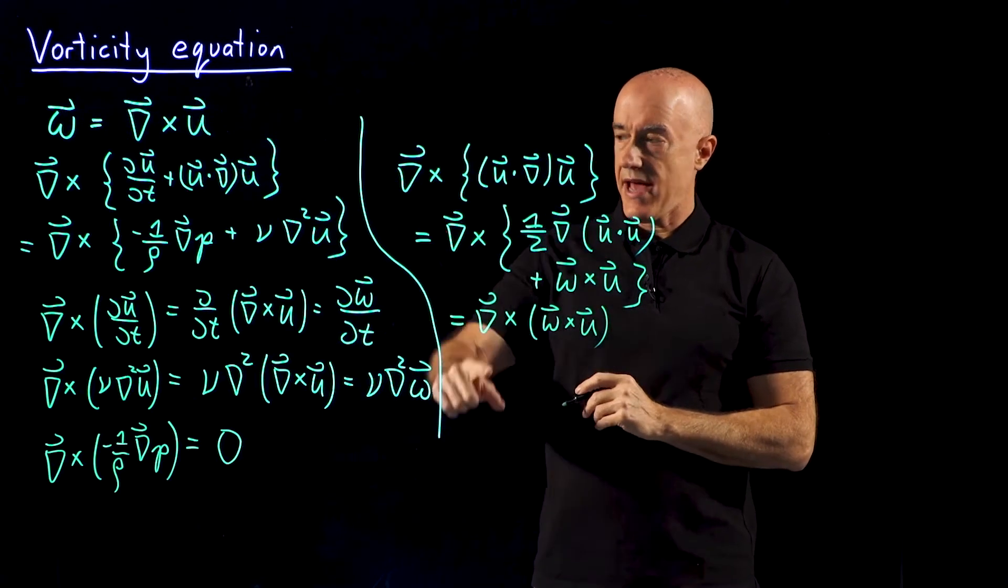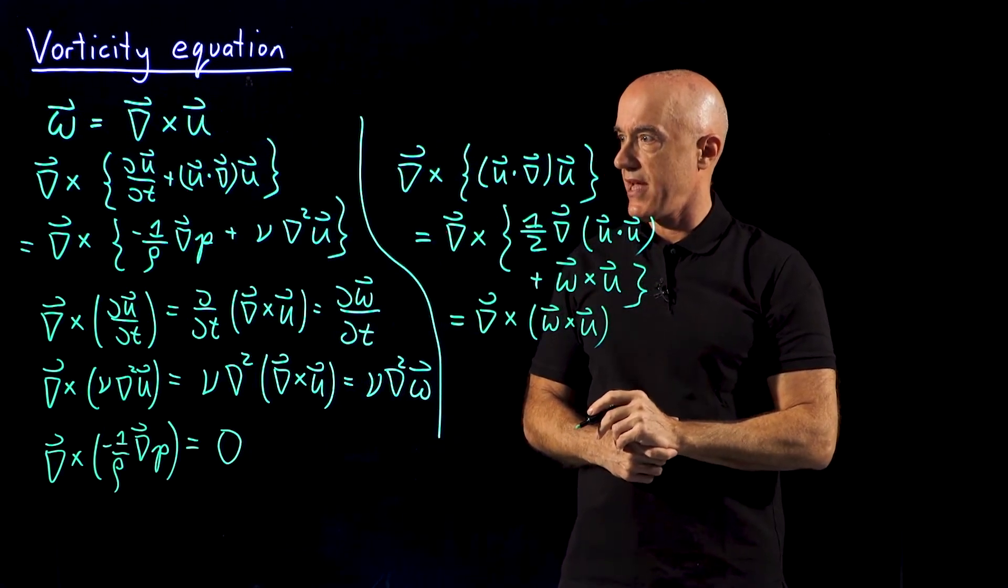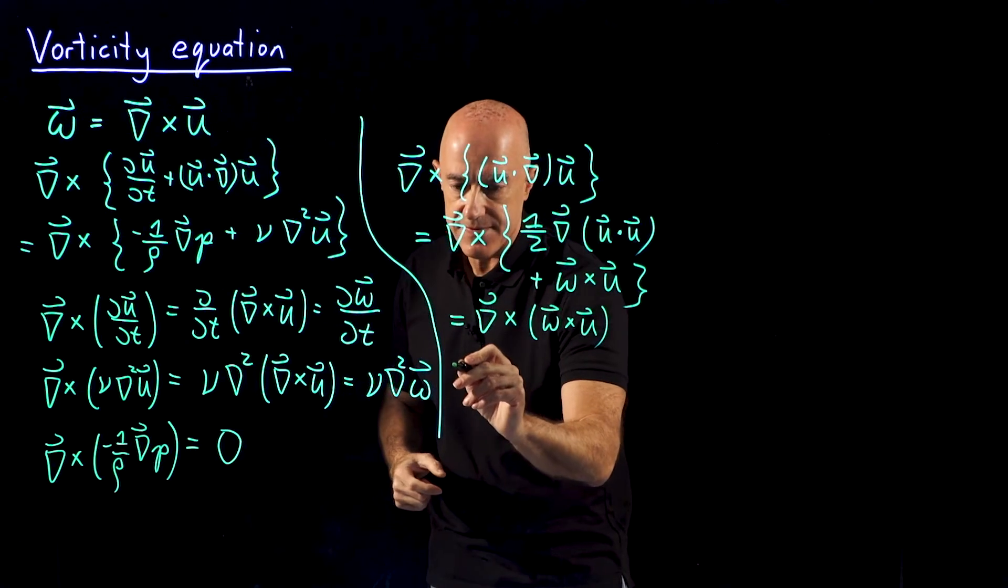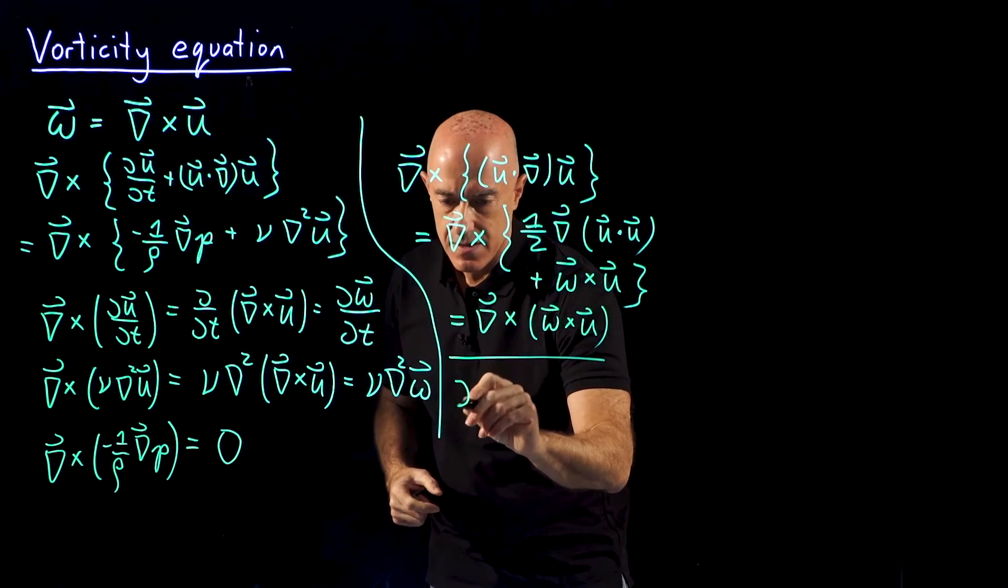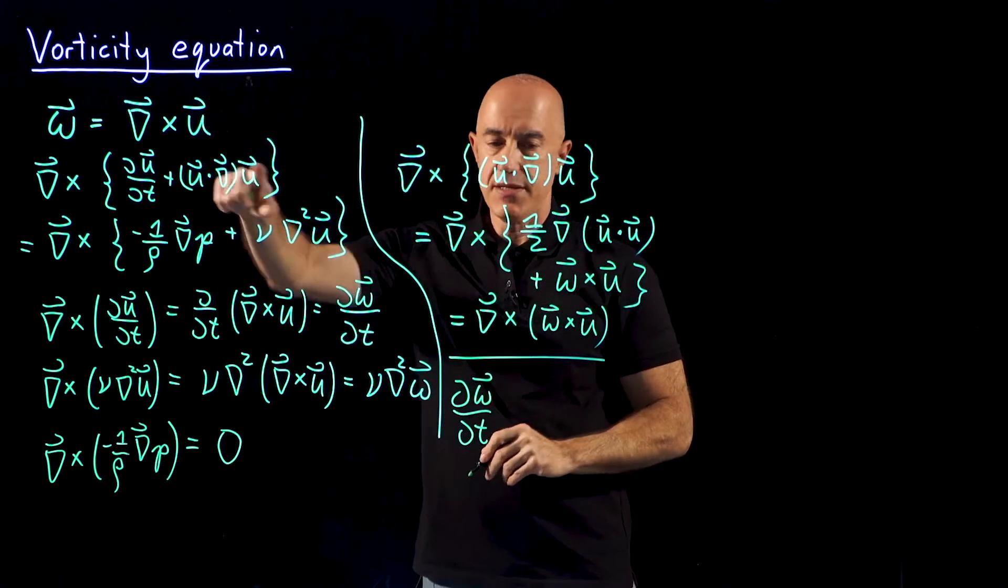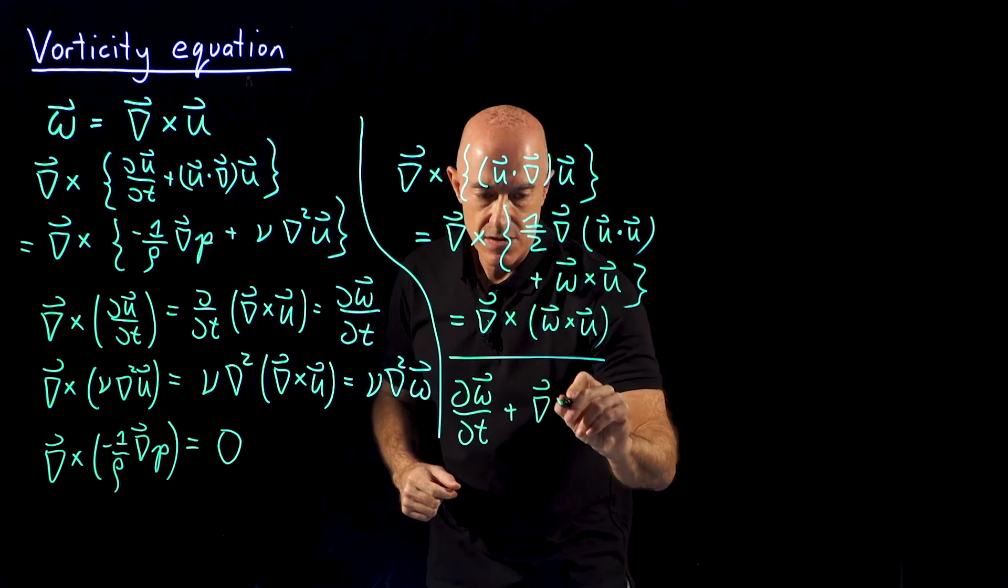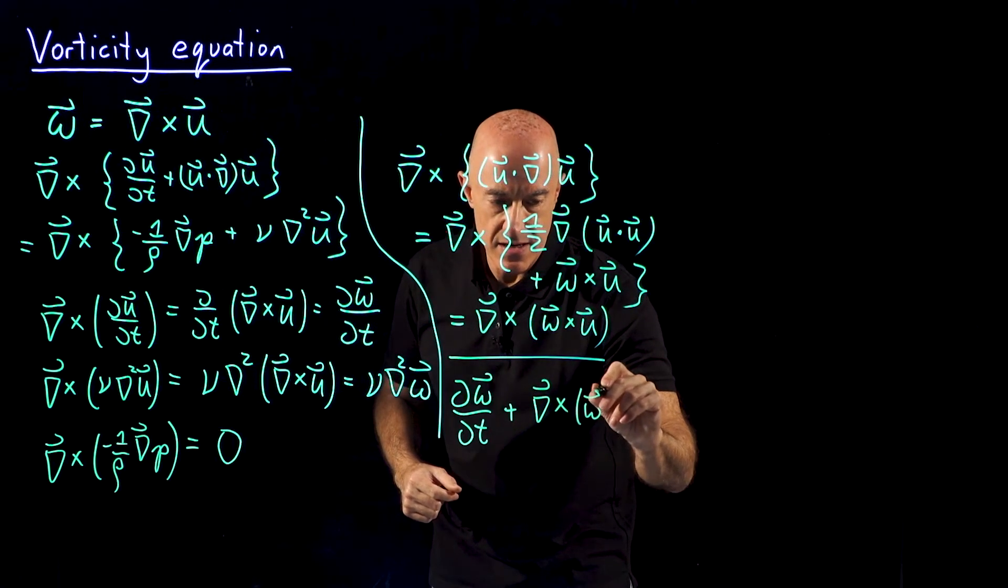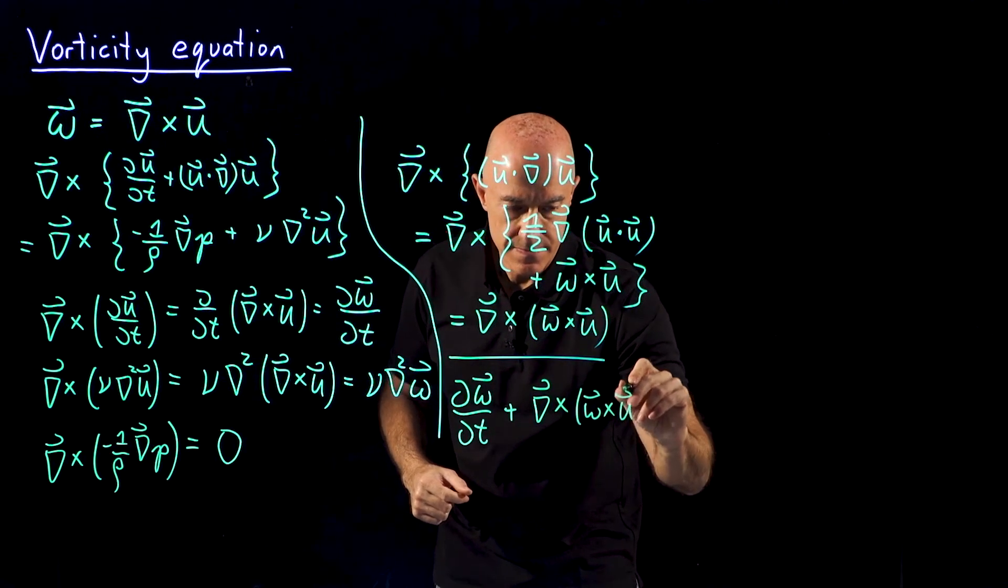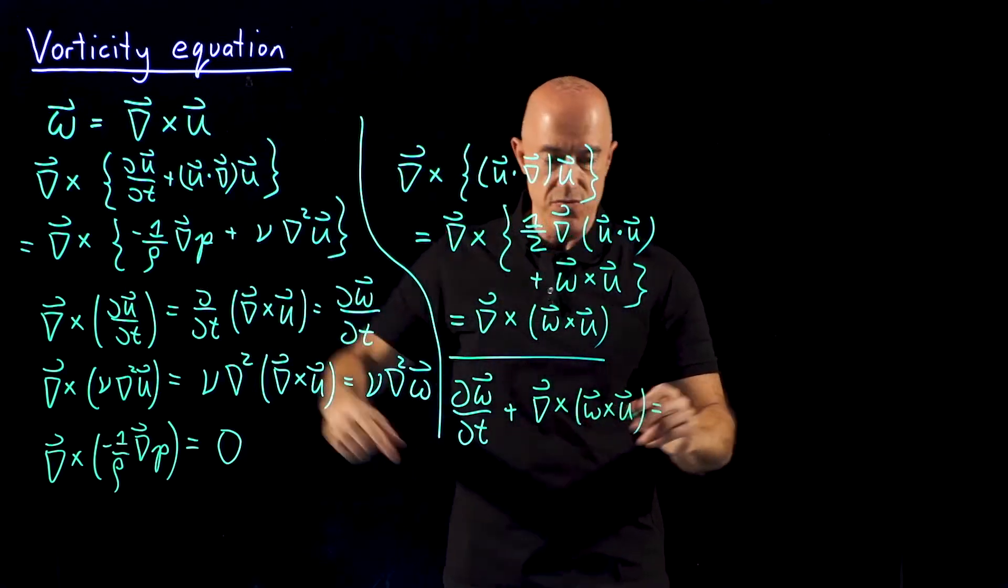Now we have the Navier-Stokes equation putting it all together. We have d omega dt plus the nonlinear term, which is plus del cross omega cross u equal to the right-hand side. So the pressure went away.